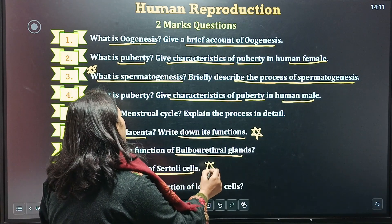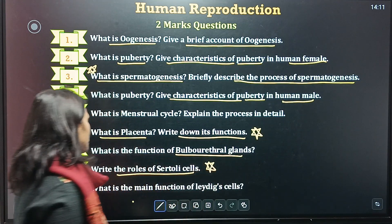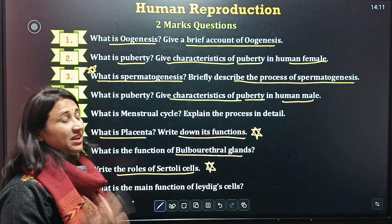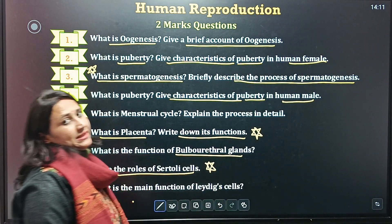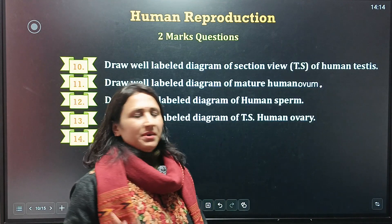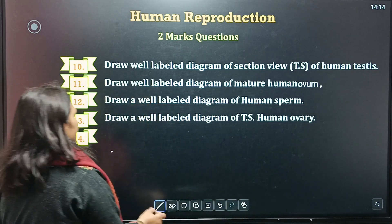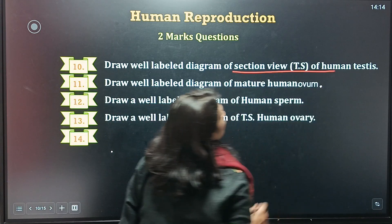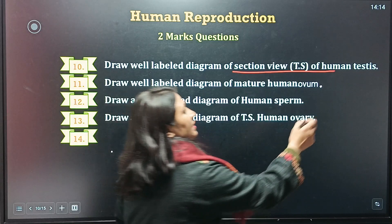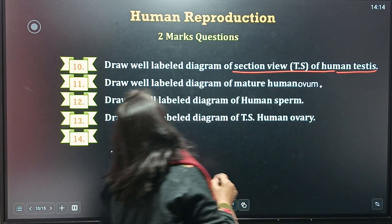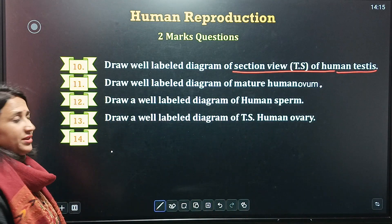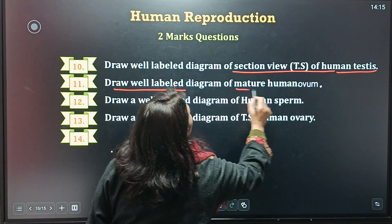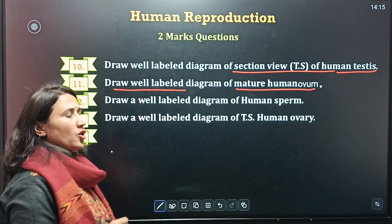This is also one of the most important questions. Ninth is: what are the main functions of Leydig cells? Question number 10: draw a well-labeled diagram of TS of human testes. Question number 11: draw a well-labeled diagram of mature human ovum.